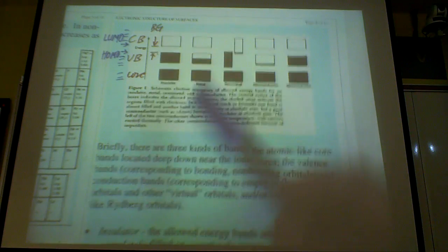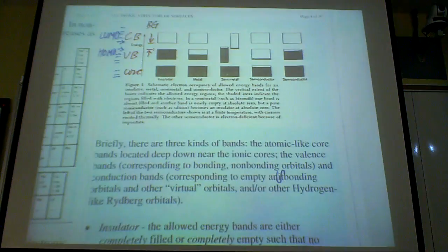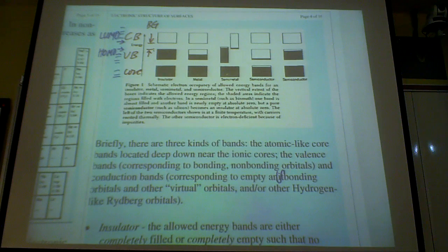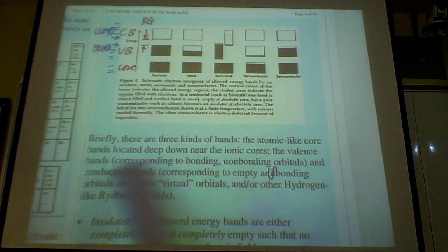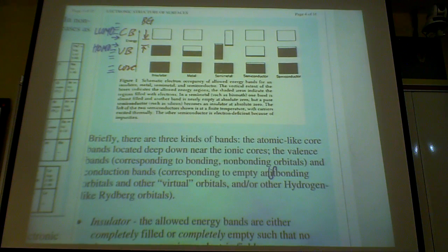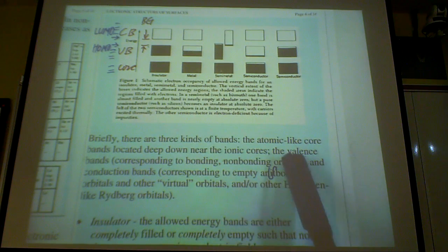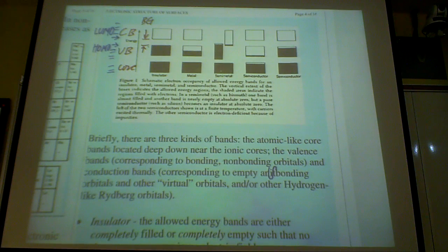So if you consider this kind of picture, this essentially MO picture, what you can do is classify these bands: atomic-like core bands, deep down into the ionic core, into the nuclei that you have, and then you have the valence band.